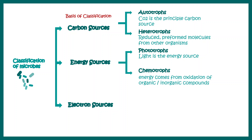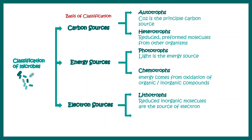Lastly, based on electron sources, they can be classified into lithotrophs, where the electron source is reduced inorganic molecules, and organotrophs, where the source of electrons is organic molecules. These are the basic nomenclatures or set of rules that help us understand and classify bacteria.